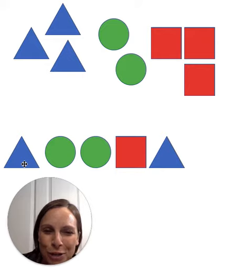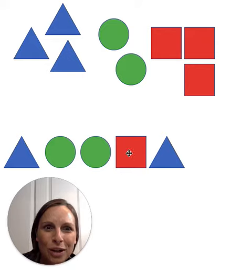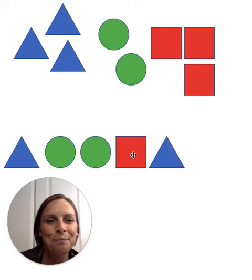I know these blue shapes are triangles. I know the green shapes are circles, and the red shape is a square, a special kind of rectangle.